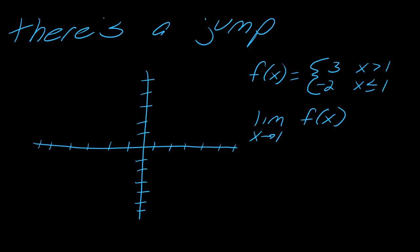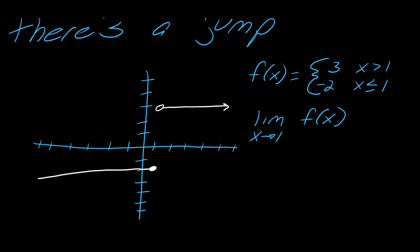The first type of limit that is guaranteed to not exist is a limit where there's a jump. Here's a piecewise function that is constant. When x is greater than 1, this will be 3. That's the first part of the piecewise function, and otherwise — when x is less than or equal to 1 — this function will equal negative 2.